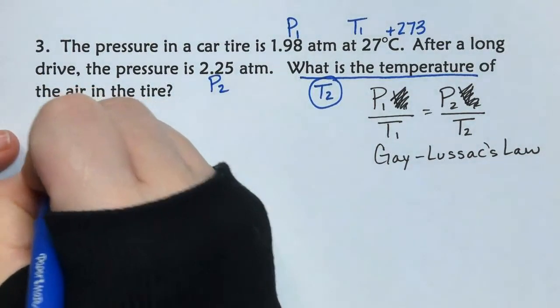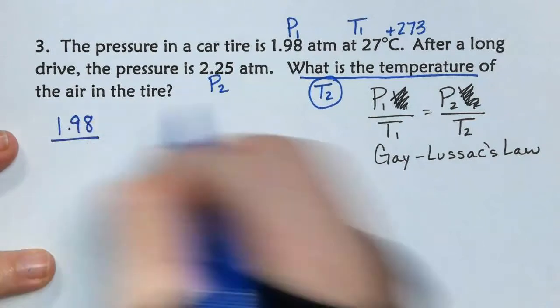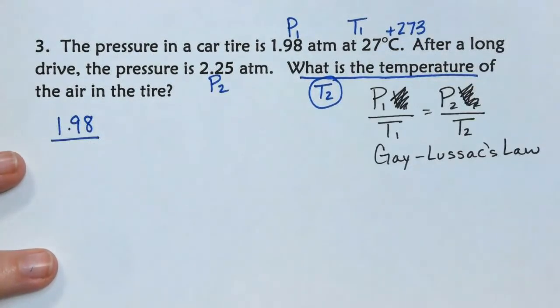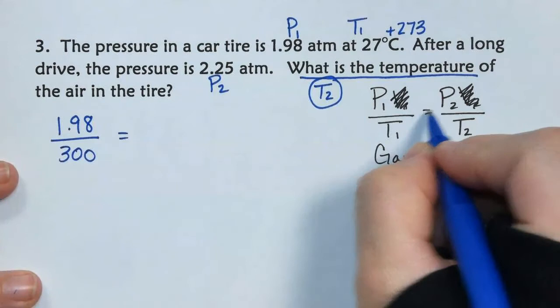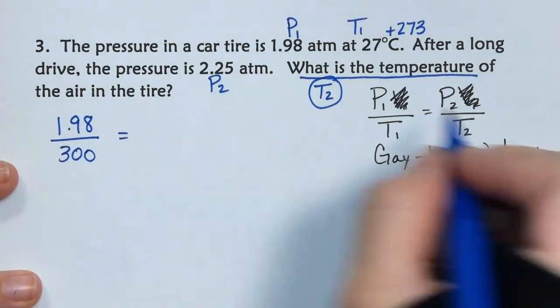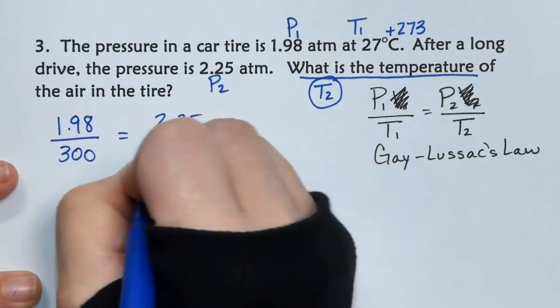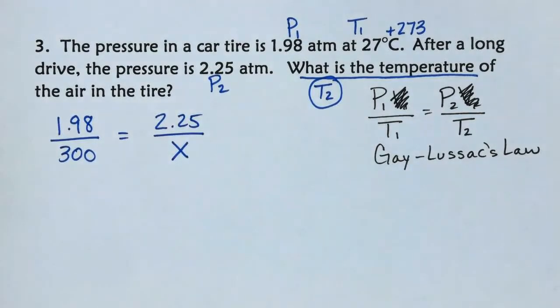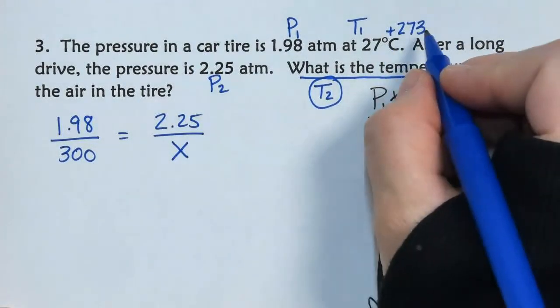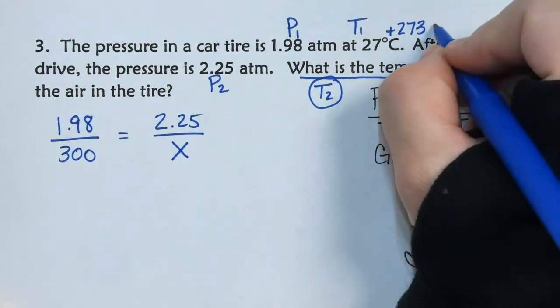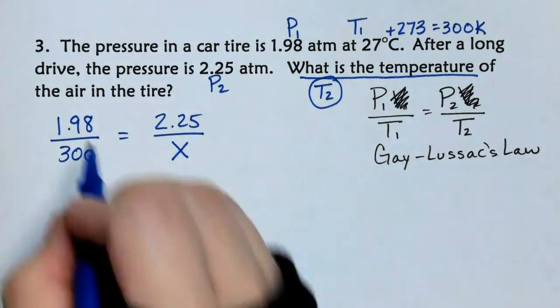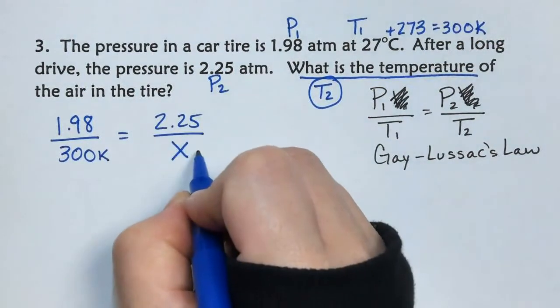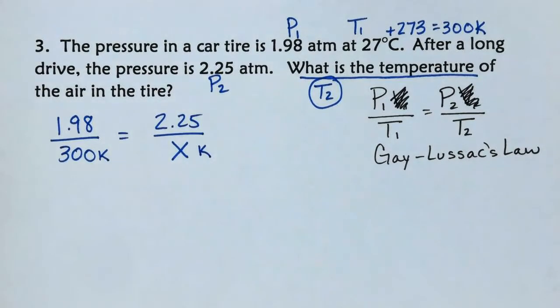I'm going to put P1, 1.98, over T1. I've got to add 273 plus 27, which is going to give me 300 Kelvin. Equals, put P2 over the T2. P2 is 2.25, and then T2 is my X. Notice that because we added 273 to this Celsius, the answer to that, which was 300, is our Kelvin temperature. So, that means this is Kelvin, which means that whatever answer I get for X is also going to be in Kelvin.